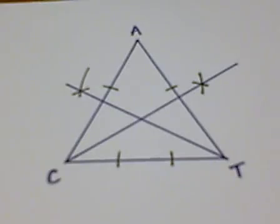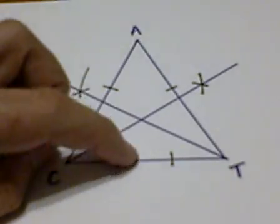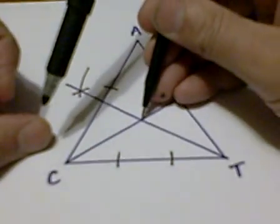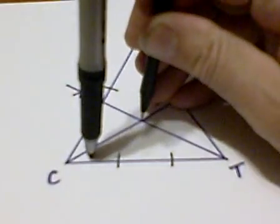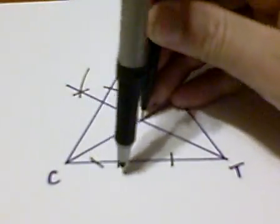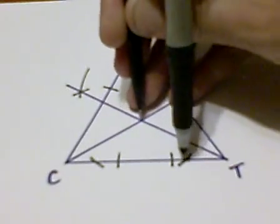So to do that, we have to construct an altitude from the in-center to one of the sides. And I'm going to use side CT, which is generally the easiest side since it is parallel to the edge of the paper.